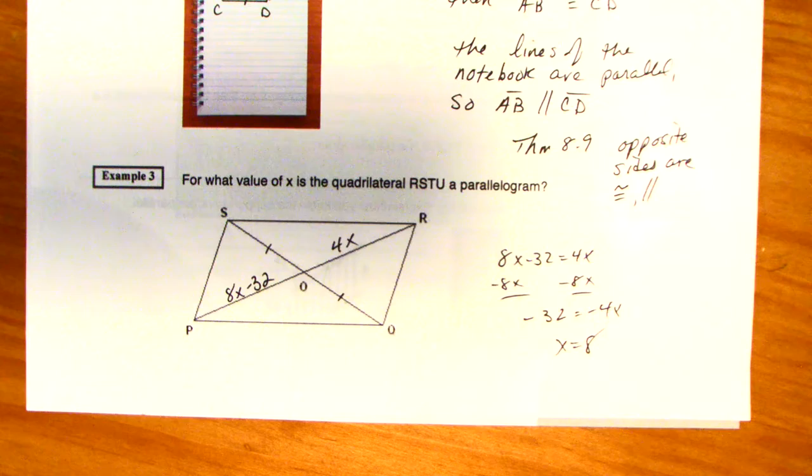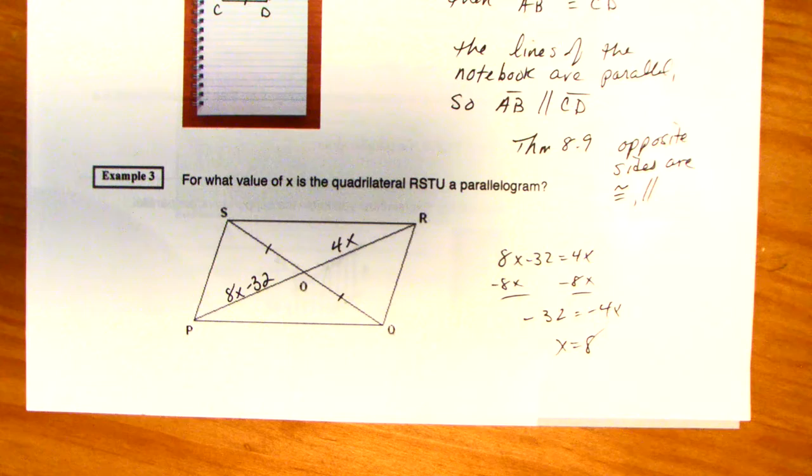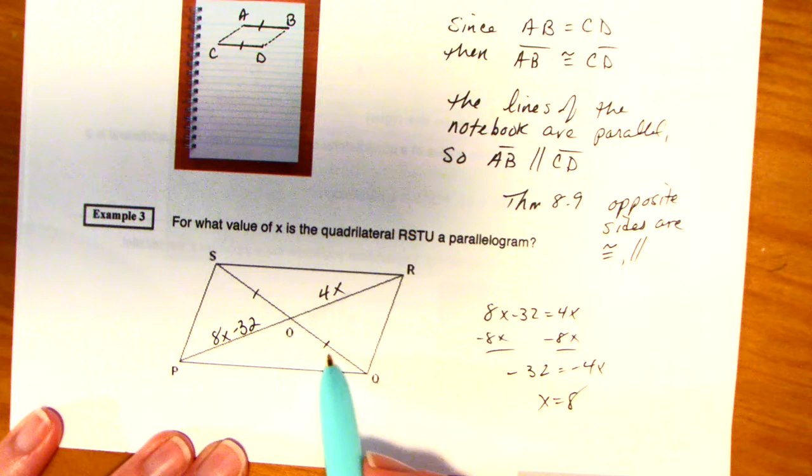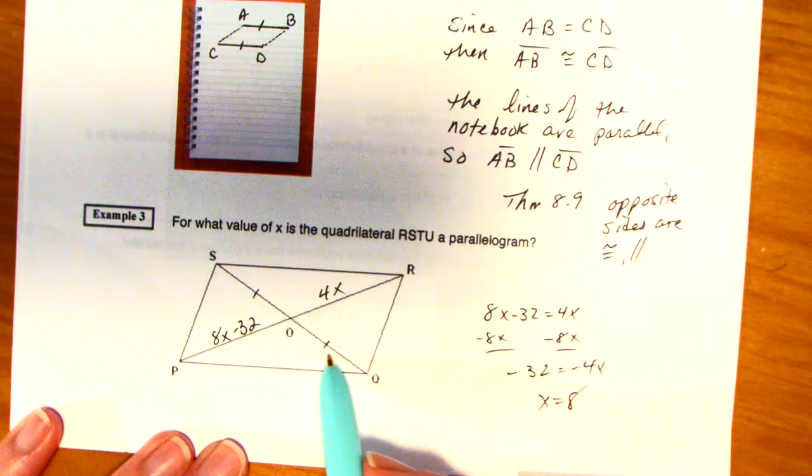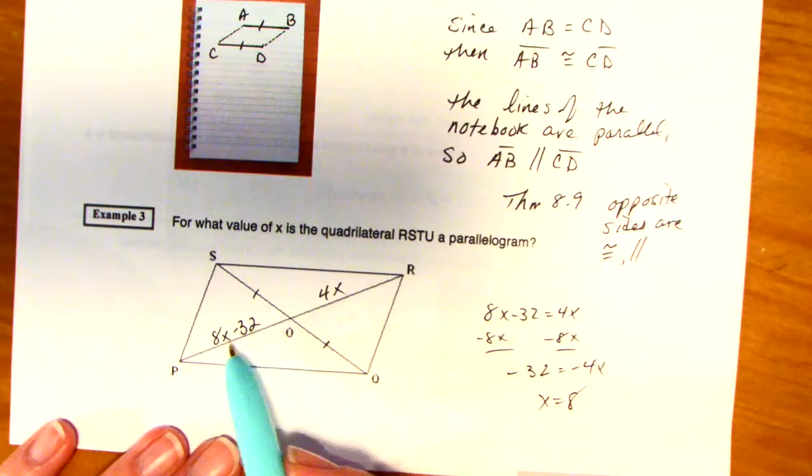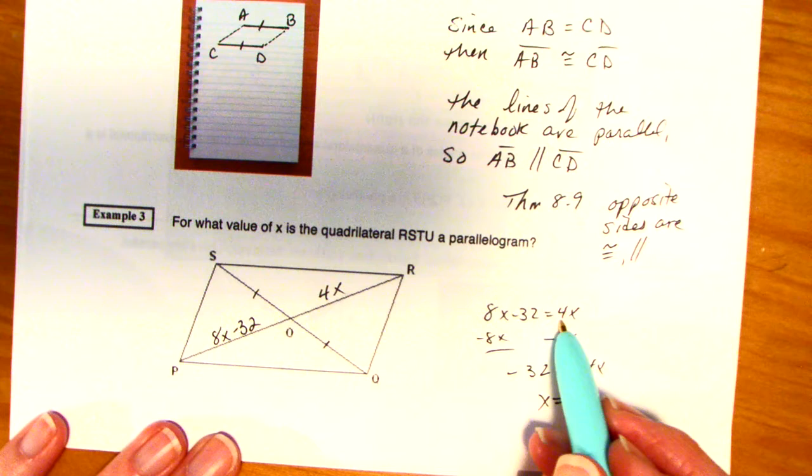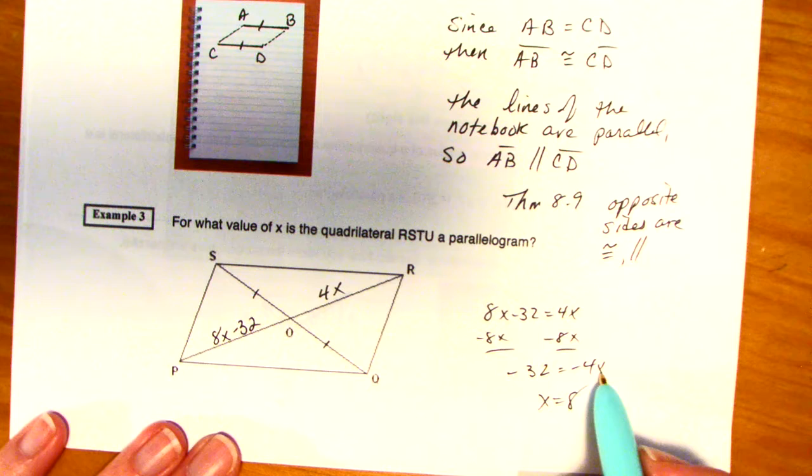Example 3. Now, we want to use theorem 8.10 that says the diagonals bisect each other. Well, I know that this set is bisected. But in order for this to be a parallelogram, these two have to be bisected. Or at least this whole segment has to be bisected, meaning these two have to be equal to each other. So, 8x minus 32 equals 4x. Subtract 8x on both sides. Negative 32 is equal to negative 4x. Divide both sides by negative 4. x is 8.